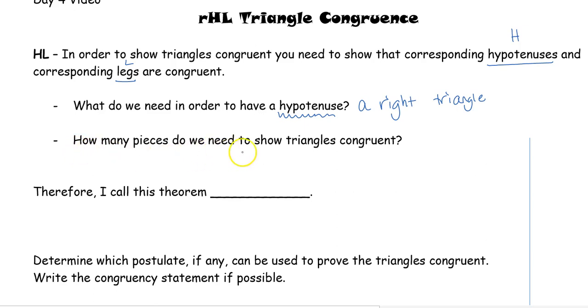Which brings us to how many pieces do we need to show triangles congruent? We talked all through our last video that we need three pieces of information to prove a triangle's congruent. So, if I'm just looking at HL, my mind might start wandering off and think, oh, I only need two. I just need the hypotenuse and I need the leg. That's why I call this theorem the RHL theorem. But otherwise, you may hear it referenced by someone else as the HL theorem. But it is the RHL because we need a right angle in order to have the hypotenuse and then we have our leg.